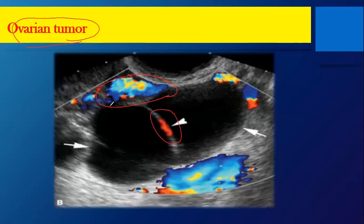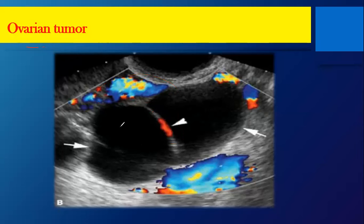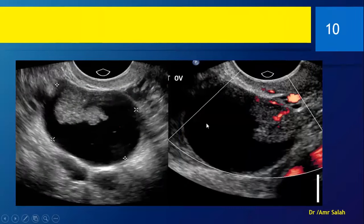You cannot diagnose this if your machine does not have Doppler function or if you don't know how to adjust it. Check the machine settings lecture on YouTube to know how to calibrate your Doppler function and detect vascularity inside. It is absolutely crucial — otherwise you will not be able to identify this as a tumor. The first and most important feature is that these lesions have vascularity or vascular flow inside.